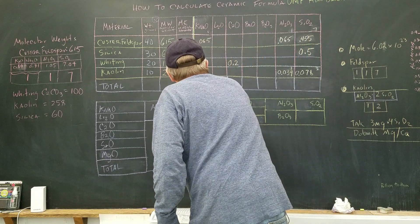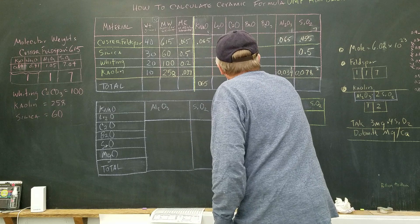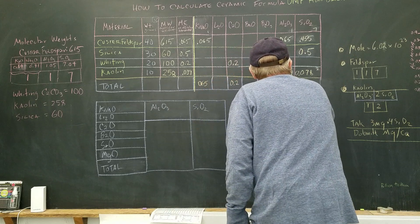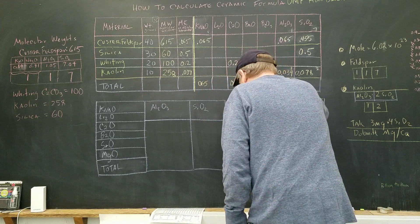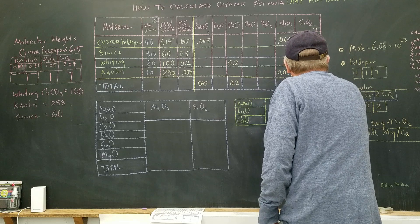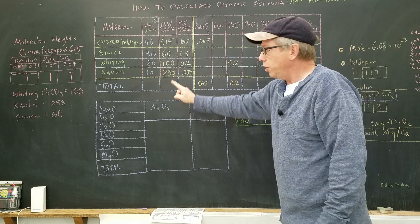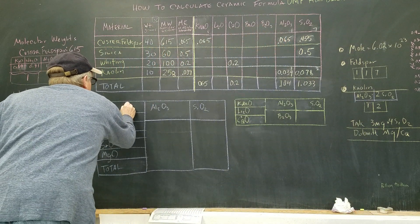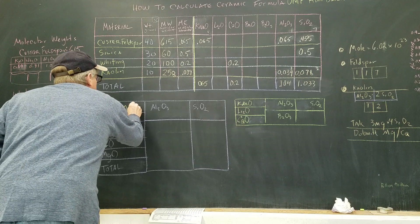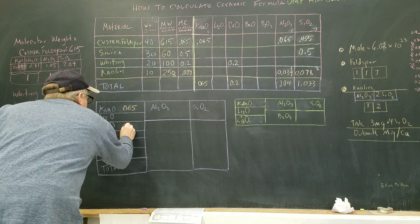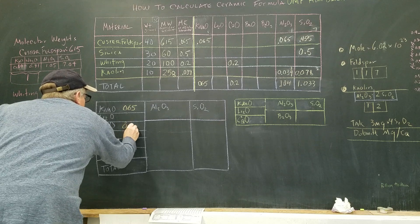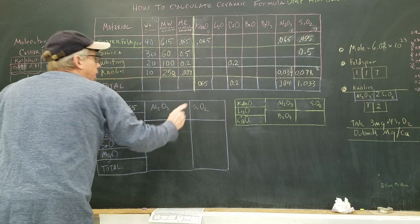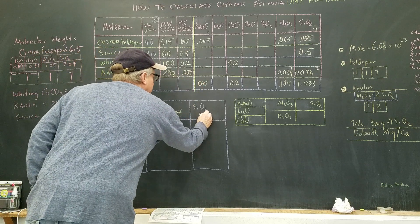Now I total everything up. Potassium/sodium: 0.065. Calcium: 0.2. Alumina: 0.039 plus 0.065 equals 0.104. Silica: 0.5 plus 0.078 plus 0.455 equals 1.033. I write those totals: whiting 0.2, alumina 0.104, silica 1.033.